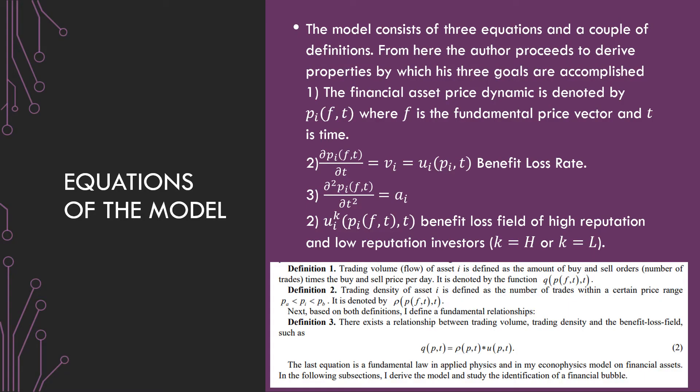So the model consists of three equations and really a couple definitions. From here, the author proceeds to derive properties where his three goals are accomplished. The first one is financial asset price dynamic is denoted by PI as a function of F and T, where F is the fundamental price vector and T is time. He defines the derivative of this price dynamic with respect to time is equal to this benefit loss rate.